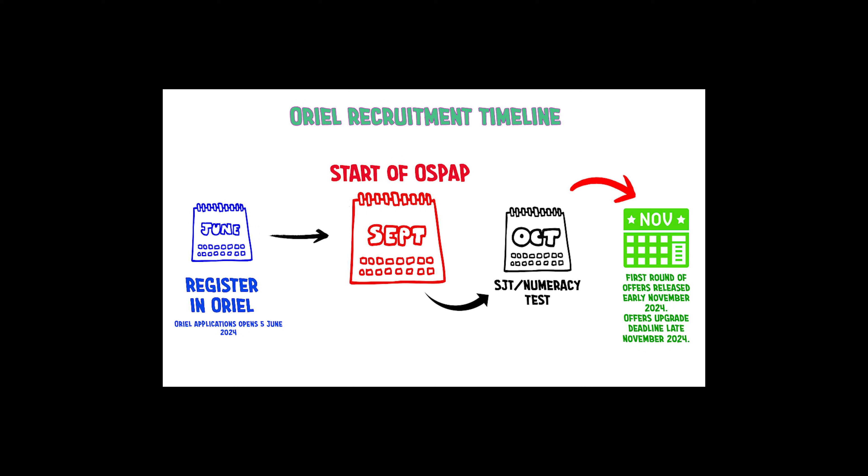After completing OSPAP, you move to the next stage: one year of foundational training. All OSPAP graduates must complete this year to register as a pharmacist in the UK. Crucially, your foundational training must be arranged even before you start OSPAP. For example, if you start OSPAP in September 2024, your application for foundational training must already be registered in Oriel by June 2024.